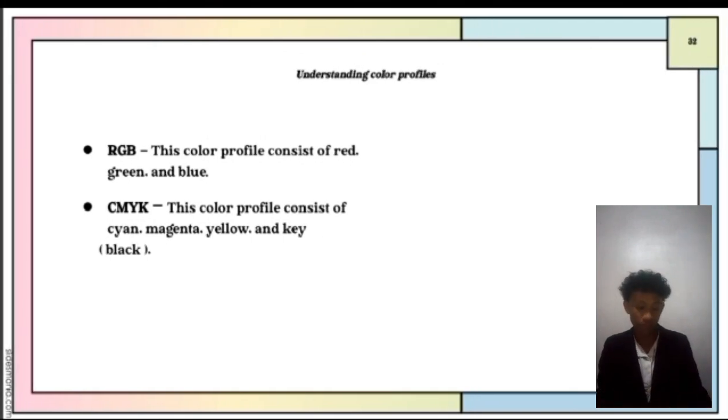Eighth, understanding color profiles. Whenever we open an image in design applications, we observe labels like RGB or CMYK. These are profiles that we need to consider for design. RGB is a profile consisting of red, green, and blue. CMYK is a color profile consisting of cyan, magenta, yellow, and black.